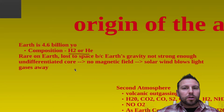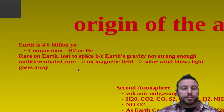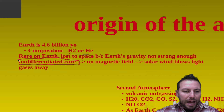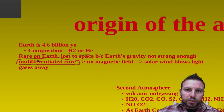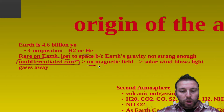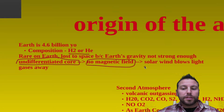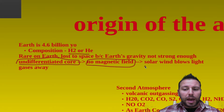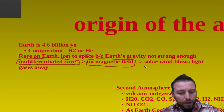Earth's gravity could not hold in those hydrogen and helium gases, and basically what happened is we lost them to space. Also at that point we had an undifferentiated core — we did not see the layers that we see now. There was no magnetic field, so there was nothing protecting us from the solar winds that came off from the Sun, and those lighter gases also blew away.